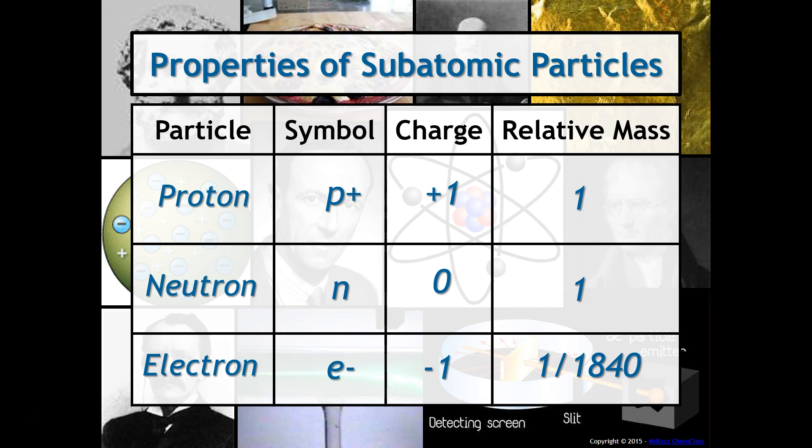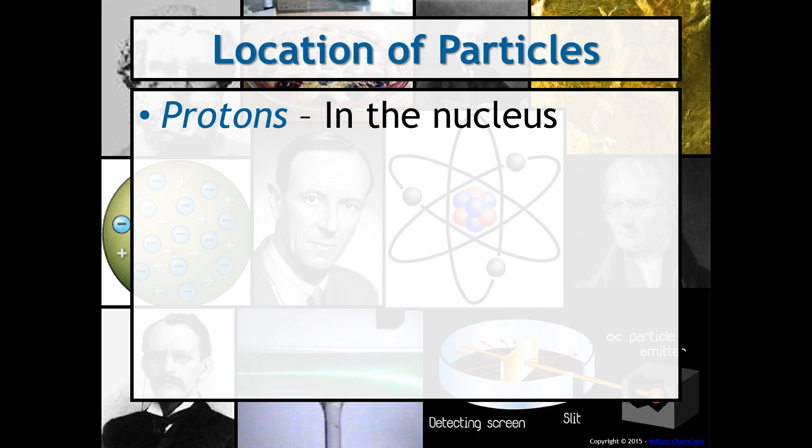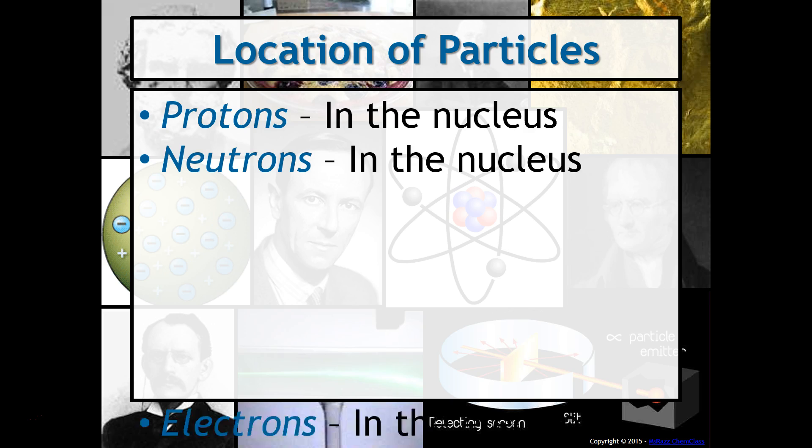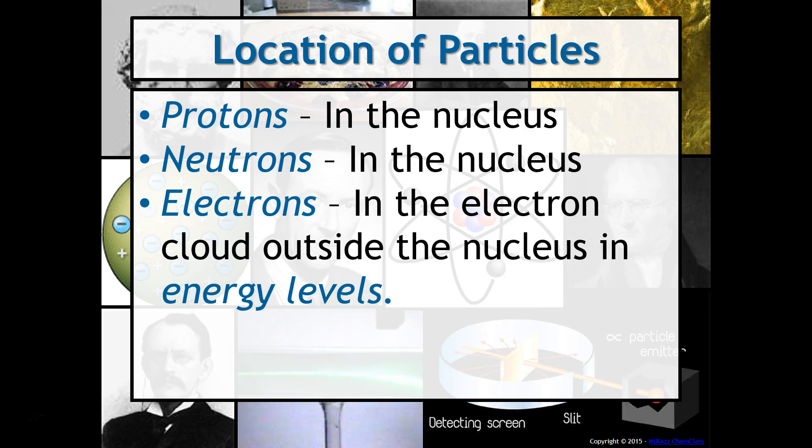It's pretty incredible when you think about it because it has such a small mass, but the charge magnitude is the same for the proton, it's just opposite. The protons, as we discussed, are located in the nucleus. The neutrons are also in the nucleus, and the electrons are in the electron cloud outside of the nucleus arranged in energy levels.